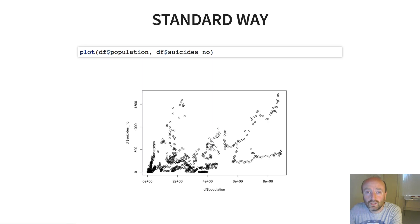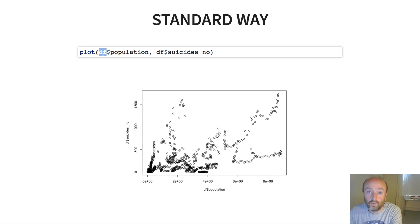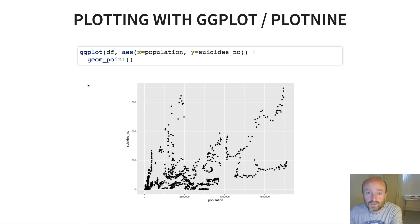Imagine that you wanted to plot the population of a country versus the count of suicides in that country. You could do that in R using this sort of command here, where df is the data frame that holds these data. You would do it in a very similar way using matplotlib in Python along with pandas. Basically all you do is call plot with an x variable and a y variable, and it produces this sort of plot here.